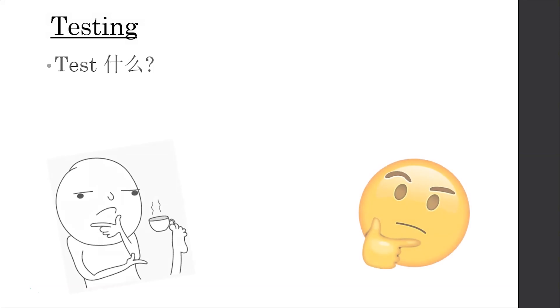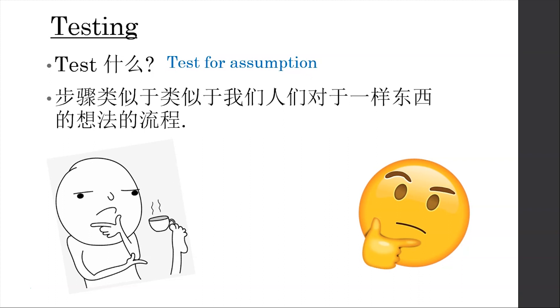First, testing means to test — Test for Assumption. Hypothesis testing's steps are just like our thought process, except it quantifies things mathematically. We give numerical values to compare against our assumed standard. We'll explain step by step what this thought process looks like. The first concept I want to introduce is 'Extreme and Surprise.' I'll use an example to explain.